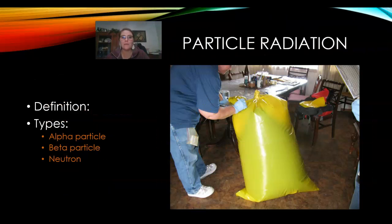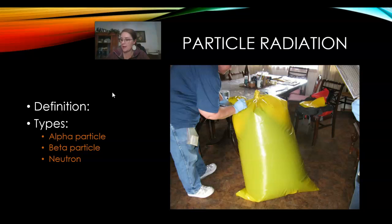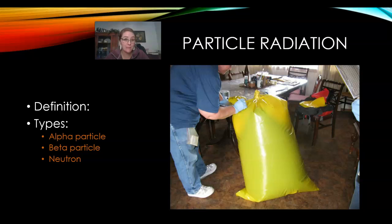So particle radiation is our first adventure in radiation here. Particle radiation is when particles with mass, produced by radioactive decay, carry energy in the form of a wave. There are a few different types: alpha, beta, and neutron radiation. These are just three types — there's even more than this.